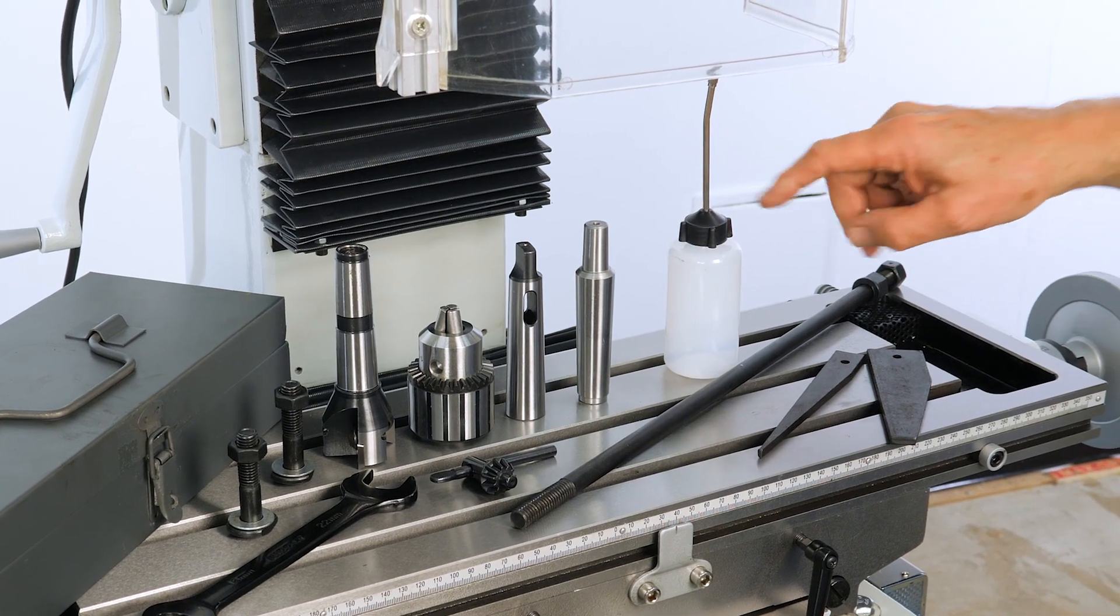So this unit comes with everything that you see here including the toolbox, the facing cutter, the drill chuck, the sleeve, the arbor, the oil can and the drifts and everything else.